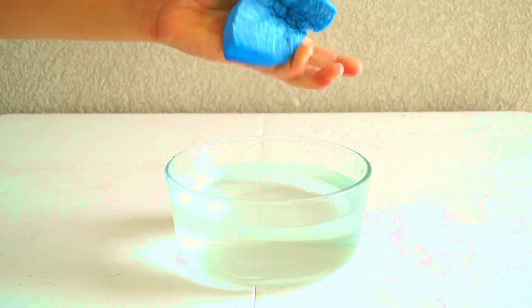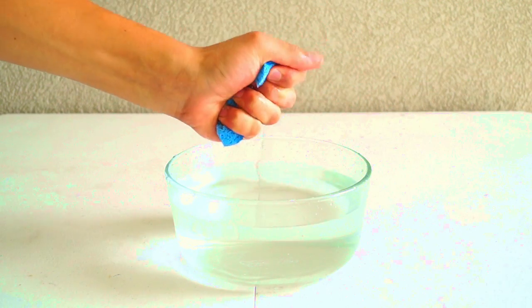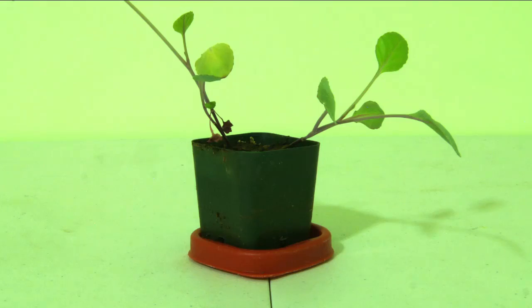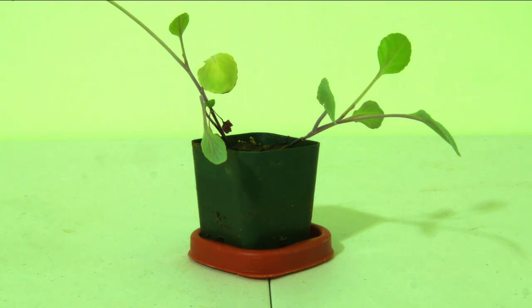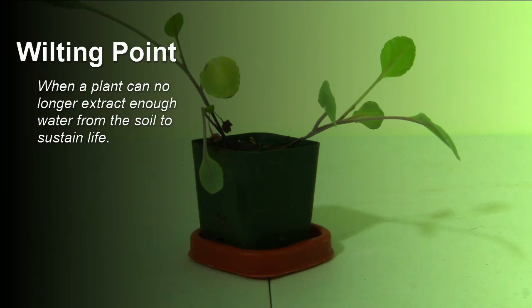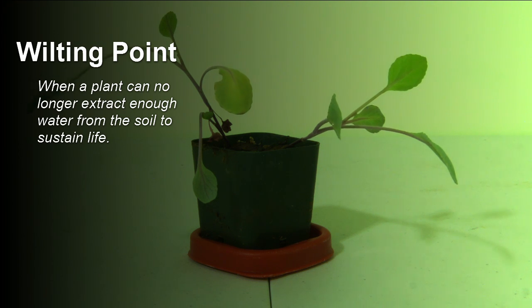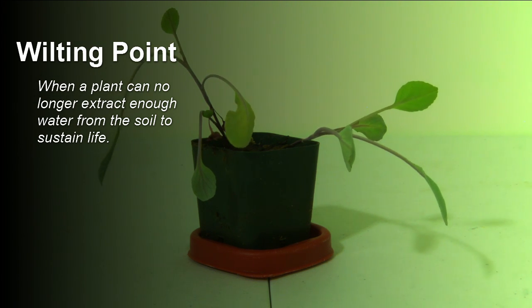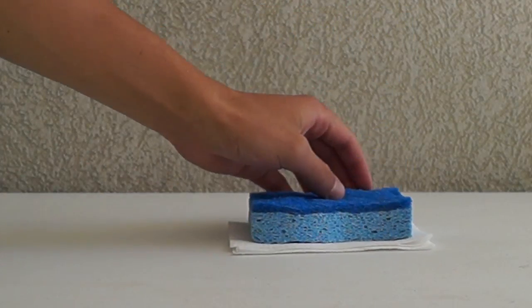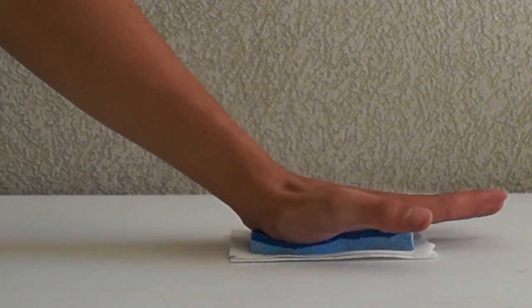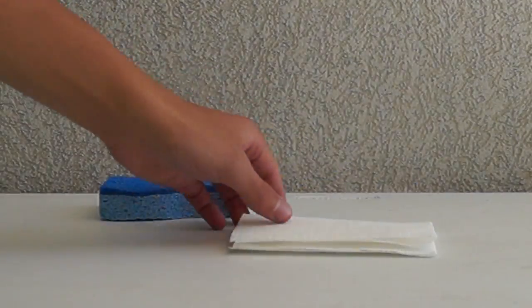Initially, when squeezing, water comes out easily, but the more that it is extracted, the harder you have to squeeze. There comes a point when the plant can no longer extract water from the soil to sustain life. This is referred to as the wilting point. Even though there may be water in the soil, it is too hard for the plant to extract. In the case of the sponge, although there still is moisture inside the sponge, no amount of squeezing will be able to get that remaining moisture out.